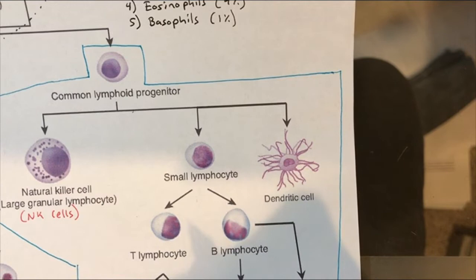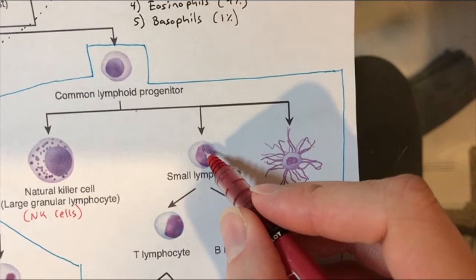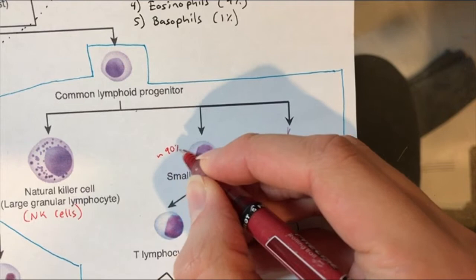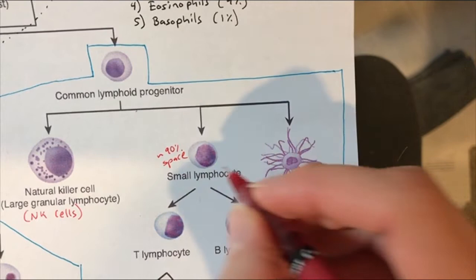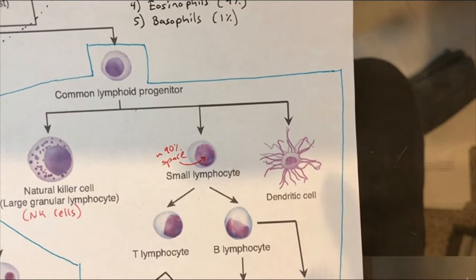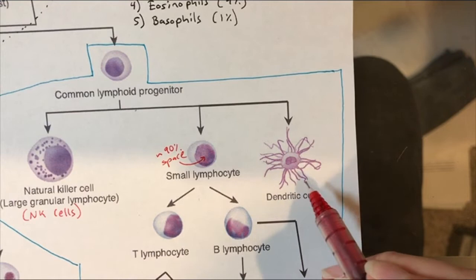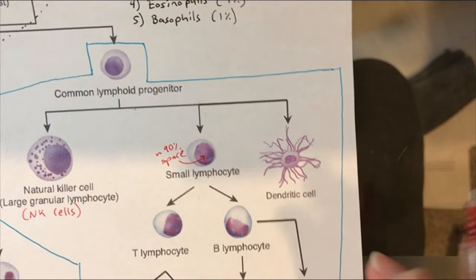Then we have a small lymphocyte — we can tell if something's a small lymphocyte under a microscope because of how much space the nucleus takes up inside of the cell. The nucleus is probably taking up about 90% of that space. And then we have a cell called a dendritic cell. 'Dendro' in Latin translates to something like 'branches,' so you can see why this cell gets the name dendritic cell — because it's a sort of branching cell.